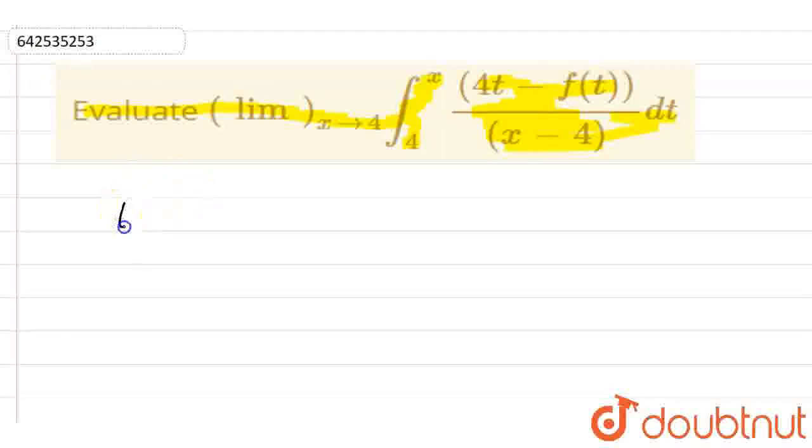In this question we have a limit x tends to 4, integral from 4 to x, and the function is 4t minus f(t) divided by x minus 4 dt. Here, my variable part is t and x is my constant.